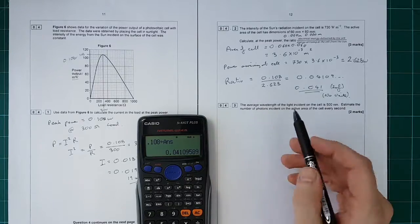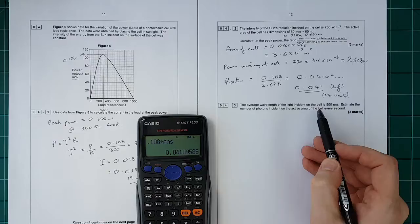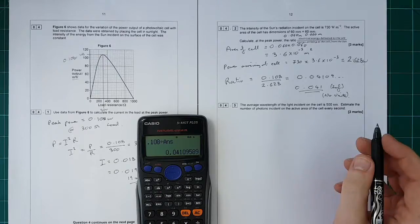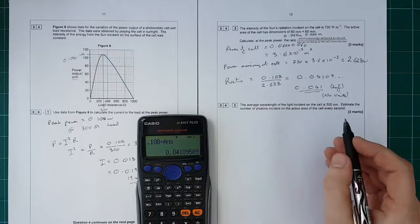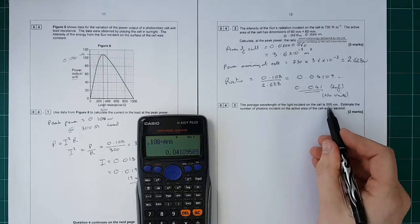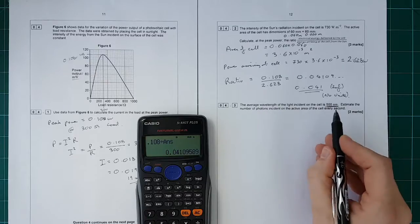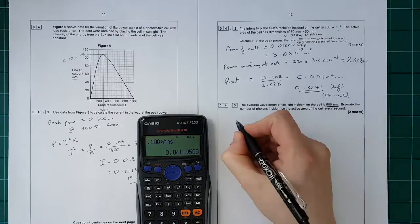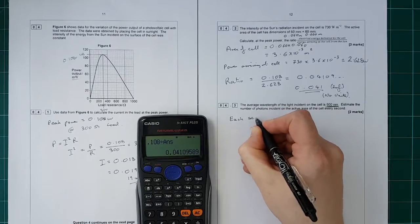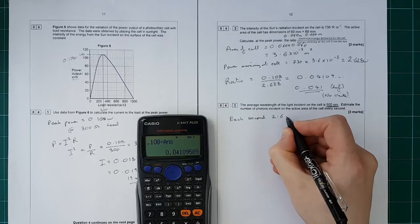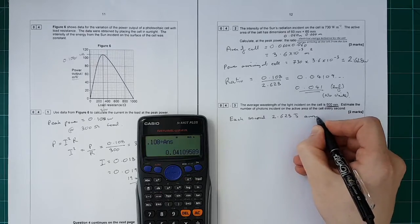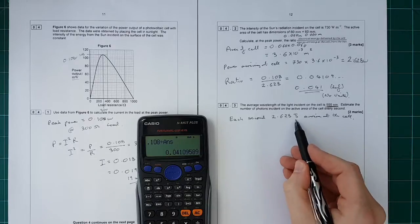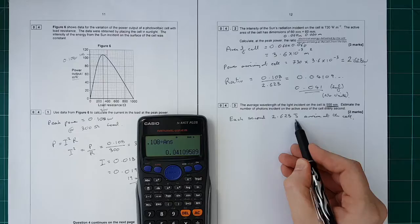Next question, part 3: the average wavelength of light incident upon the cell is 500 nanometers. Estimate the number of photons incident upon the active area of the cell every second. What they're asking is if you have photons of that wavelength, how many do you need to develop that much power every second. Each second, 2.628 joules arrive at the cell.